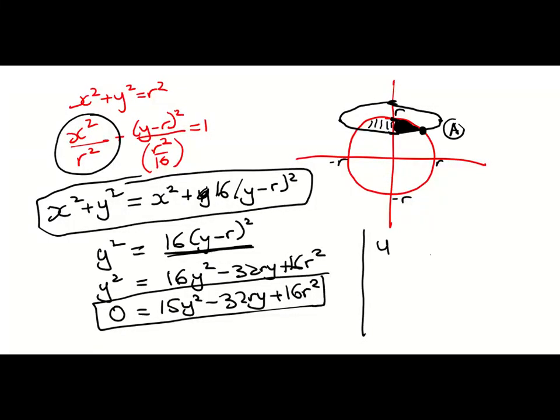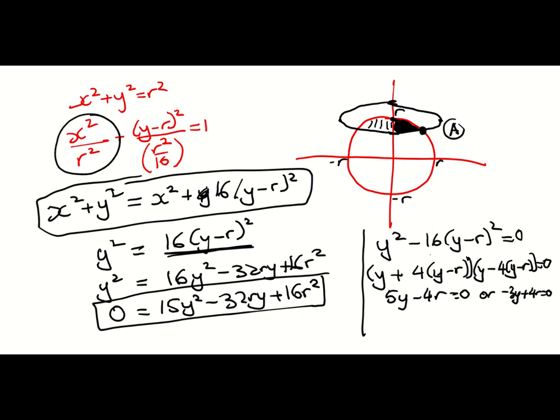The difference of two squares is y² - 16(y - r)² = 0. I can factorize that as follows: (y - 4(y-r))(y + 4(y-r)) = 0, which gives (5y - 4r)(-3y + 4r) = 0. So 5y - 4r = 0 or -3y + 4r = 0.